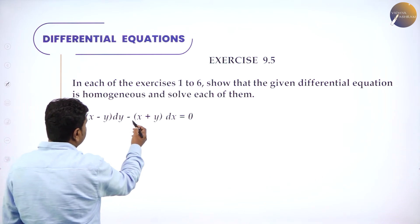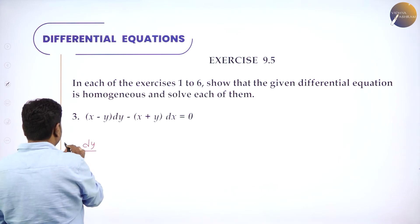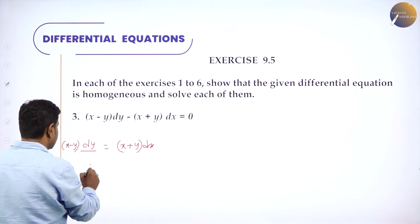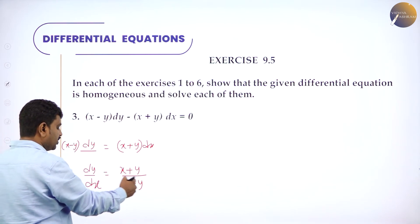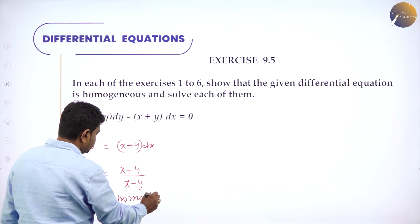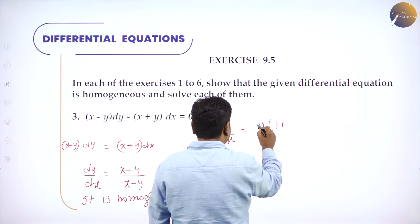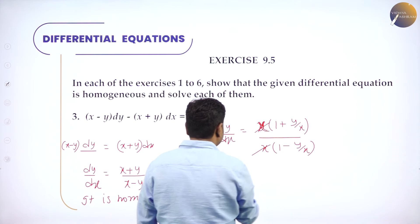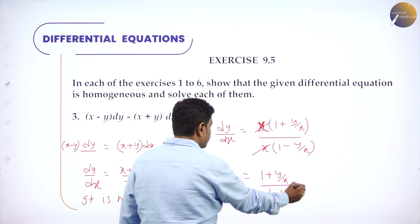Next: (x − y)dy − (x + y)dx = 0. Rearrange: (x − y)dy = (x + y)dx, so dy/dx = (x + y)/(x − y). Each term has the same degree — power 1 each — so it is homogeneous. Taking x common: numerator gives 1 + y/x, denominator gives 1 − y/x. Cancel x. So dy/dx = (1 + y/x)/(1 − y/x). Call this equation 1.